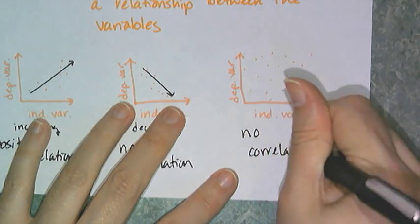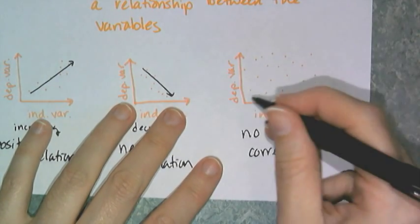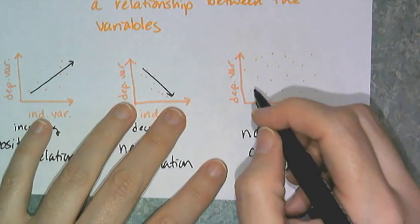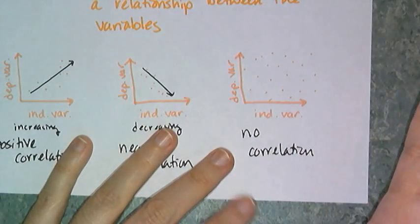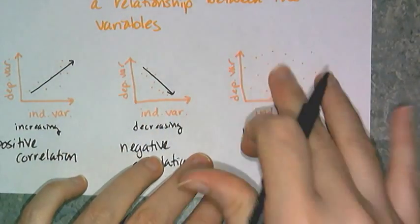So this could be like the graph of how tall you are versus your algebra grade, like there's no relationship between your height and your algebra grade, so there would be no correlation there.